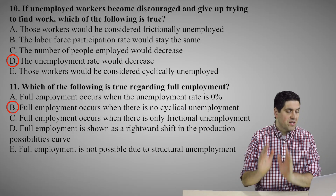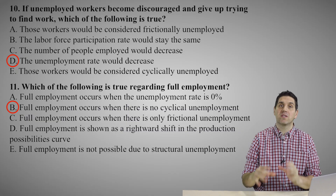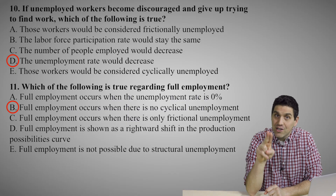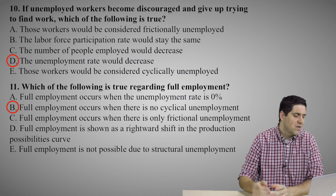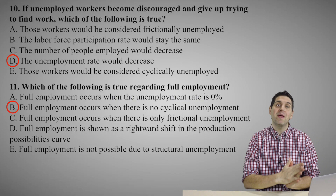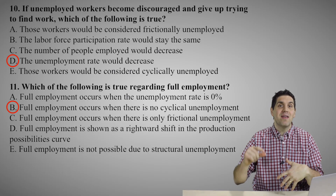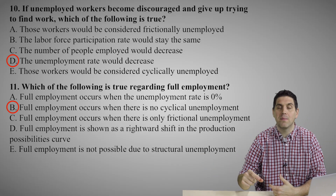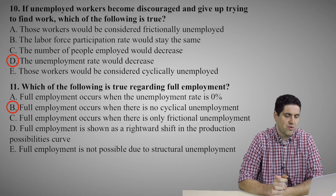For question eleven, the right answer is B. Some people think the right answer might be A, but full employment is not when there's 0% unemployment. There's always going to be frictional and structural unemployment no matter what. When you add those together you get the natural rate of unemployment, which we call full employment — about 4% to 6%, or roughly 5% in the United States. Full employment is just no cyclical unemployment. A rightward shift in the production possibilities curve — no; employment is being on the curve. And E — full employment being impossible due to structural unemployment — no, it is definitely possible.